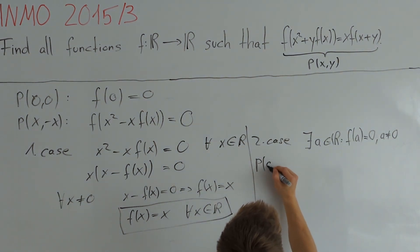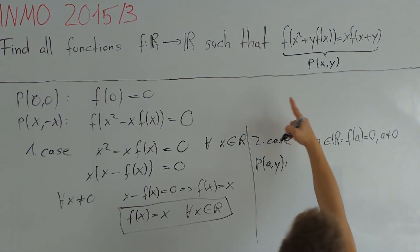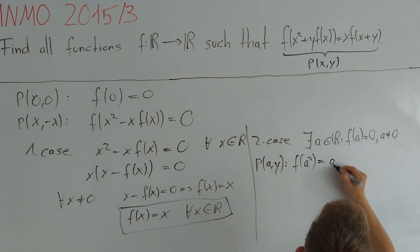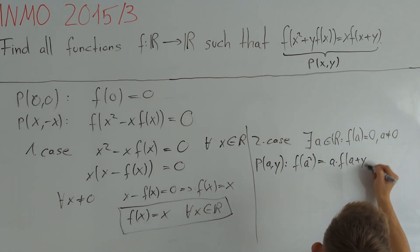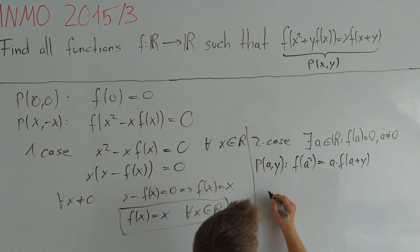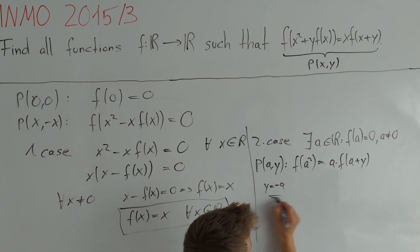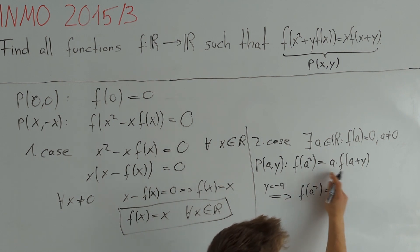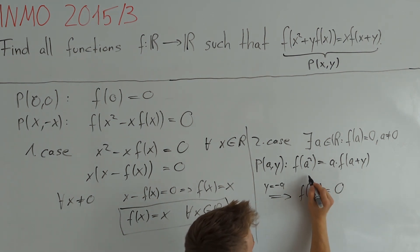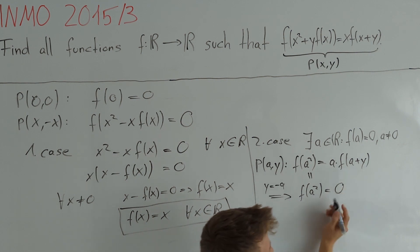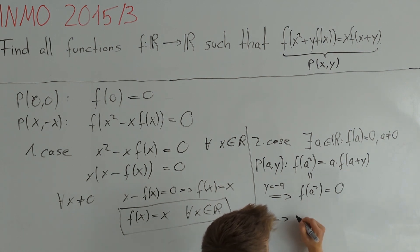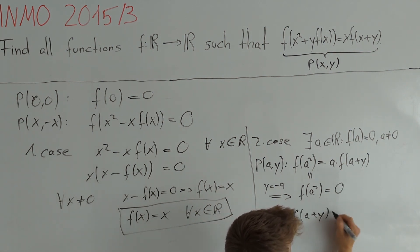Plugging in x = a gives us f(a² + a·y) = a·f(a + y). Setting y = -a gives f(a²) = a·f(0) = 0. We see these two terms are equal, so a·f(a + y) = 0. Since a ≠ 0, we conclude that f(a + y) = 0.